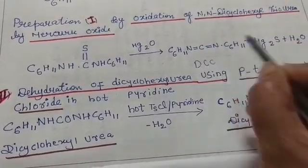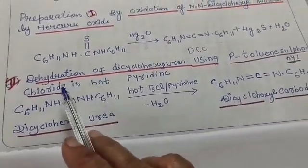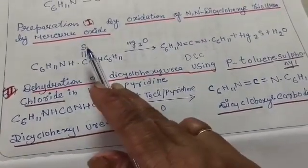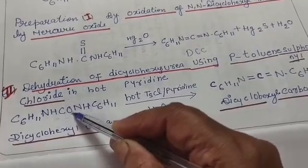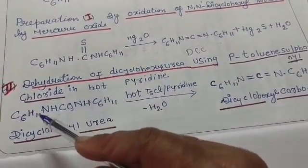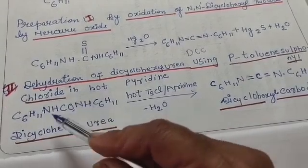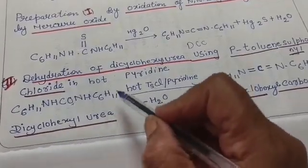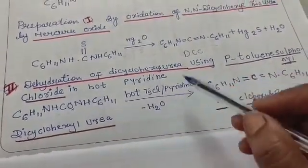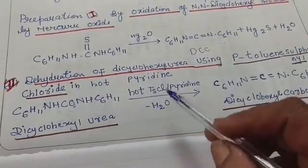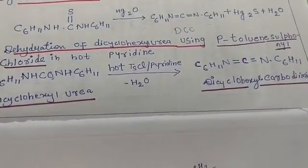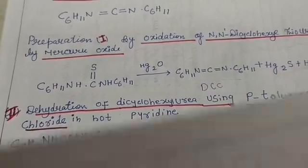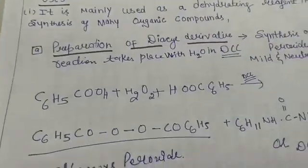The second preparation method is the dehydration of dicyclohexyl urea. In dicyclohexyl urea, the formula is C6H11-NH-CO-NH-C6H11, with oxygen instead of sulfur. In the presence of para-toluenesulfonyl chloride and hot pyridine, it gets converted to DCC. These are the two simple preparation methods of DCC.